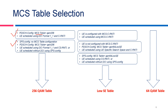For 256 QAM table selection, there are two cases. The first case is dynamic scheduling, where the UE will be scheduled with DCI 1_1 with C-RNTI. The second case is semi-persistent scheduling (SPS): when the RRC sets SPS config without any MCS table, and PDCCH config with MCS table as QAM 256, the UE is scheduled using DCI 1_1 and CS-RNTI, or the UE can be scheduled without DCI using SPS config.